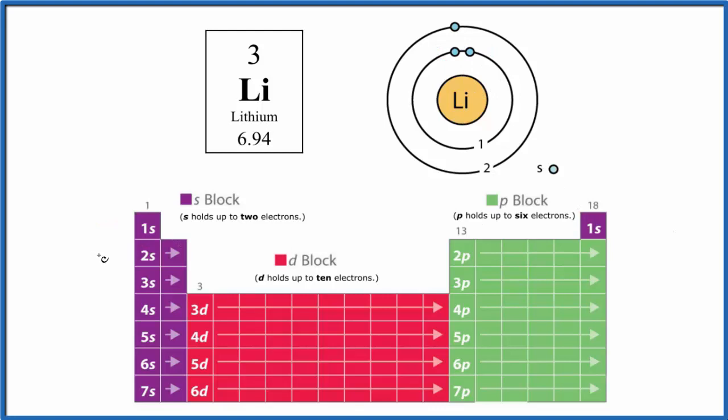Then we go to the second energy level. That's the second period. And since we only have three, we put two here. Right here is lithium. We can only put one in the second energy level. And that's it. This is the Bohr diagram for lithium.